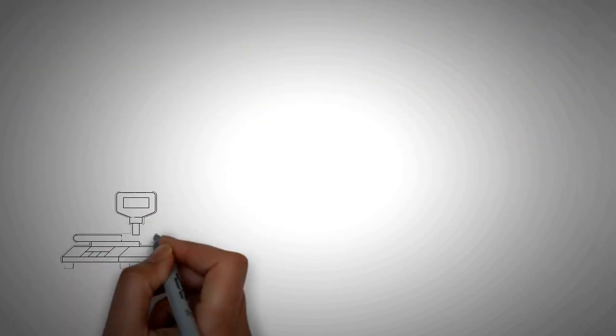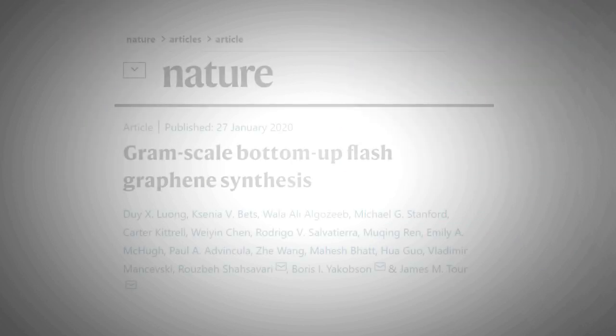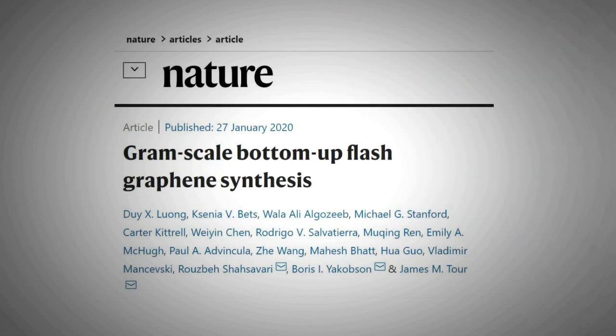Flash graphene can catapult the graphene annual production from grams to kilogram scale. More details of this can be found in the article, Grand Scale Bottom Up Flash Graphene Synthesis, that was published in the journal Nature in January 2020.